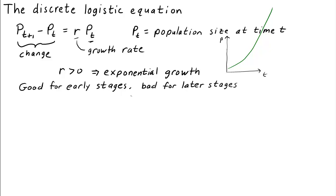In a realistic situation, the population size can't grow to extremely huge values. A population lives in an environment that can't support an arbitrarily large number of individuals. Instead, eventually the population will run out of food or space or something like that, and the population growth will slow down or stop.